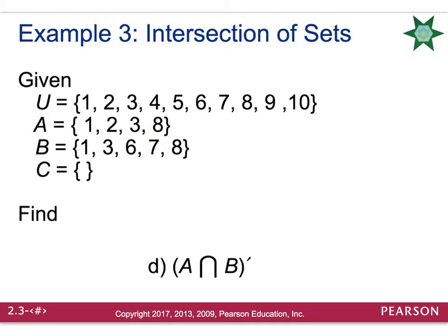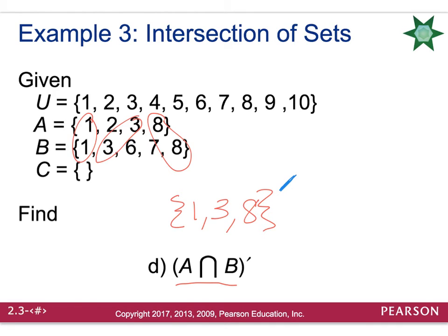One last example for intersection. Notice the set of parentheses — they have a specific order. You need to complete what is inside the parentheses first before the outside, which would be the complement. So first, find the intersection of A and B, which is {1, 3, 8}. That is what's inside the parentheses. Now we want the complement of that, meaning what is in the universal set that is not 1, 3, or 8. Eliminating those from the universal set, your solution would be {2, 4, 5, 6, 7, 9, 10}.